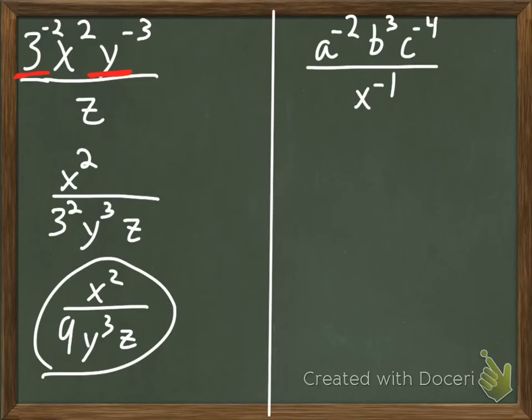Okay, look over here on the right. We have a to the negative 2nd, b cubed, c to the negative 4th in the numerator, and an x to the negative 1st in the denominator.